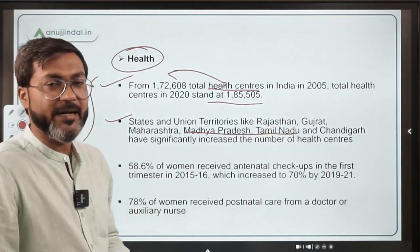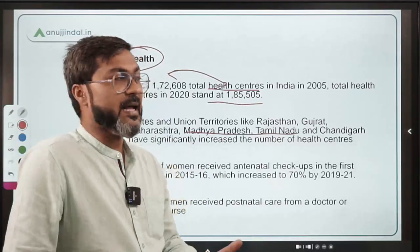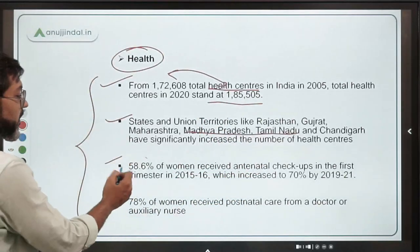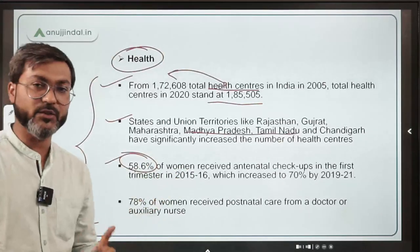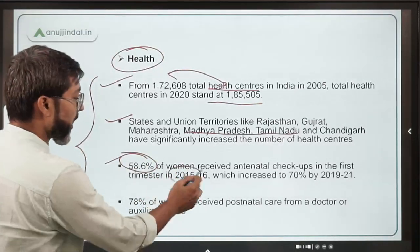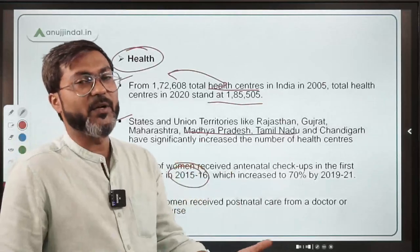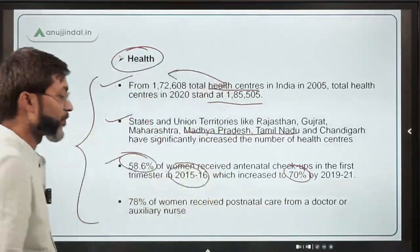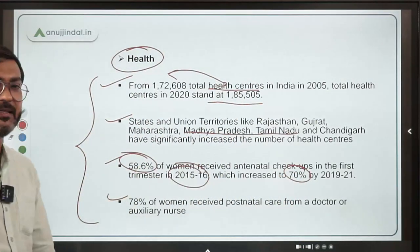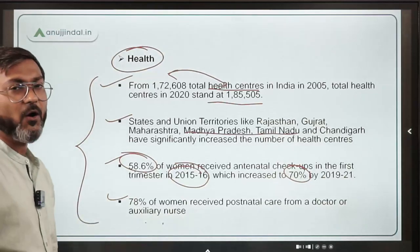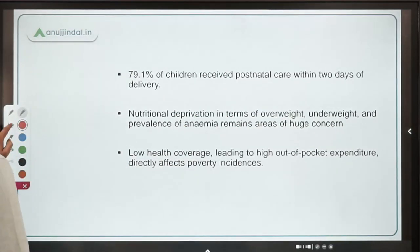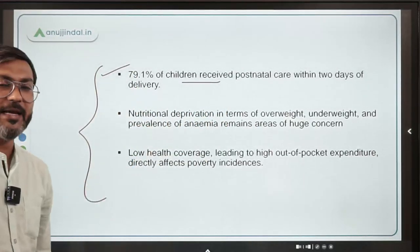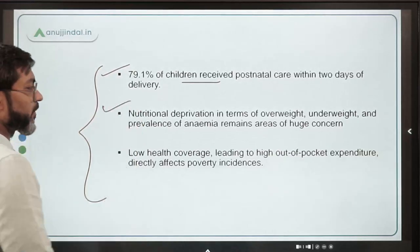States have made significant progress in establishing health centers in their respective states and UTs. 58.6% of women received antenatal checkups in the first trimester in 2015-16, which has now increased to 70%. Additionally, 78% of women received postnatal care from a doctor or an auxiliary nurse.